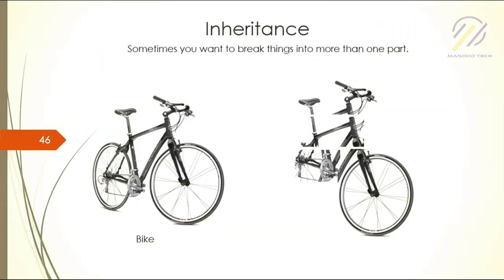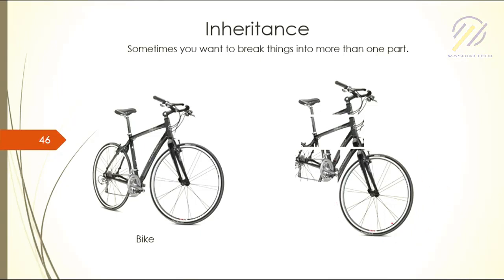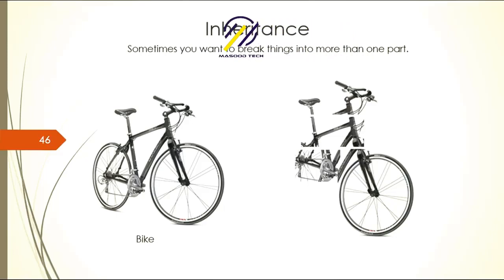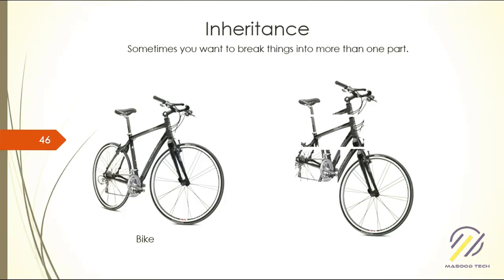If you see the bike, we really want to make it based on a modular approach. We want a part that contains the tires so that we could add one or more than two tires — as you've seen in movies, cycles which have more than two tires and more than two seats so that two people can sit on the bike.